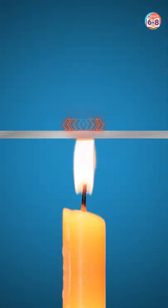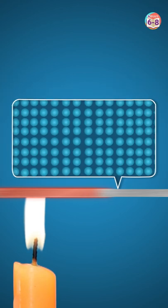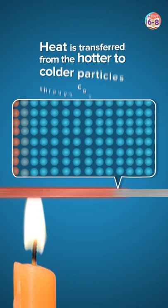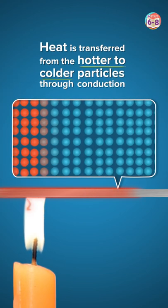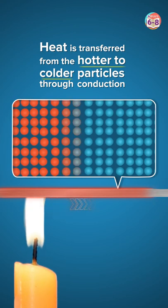When we heat one end of the metal scale, the particles start vibrating vigorously, transferring heat from the hotter region to the colder region of the metal scale. This transfer of heat is called conduction.